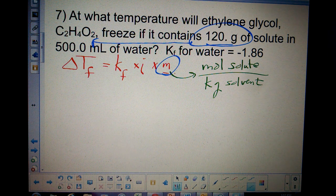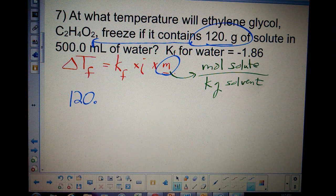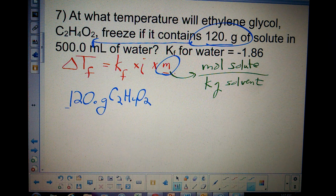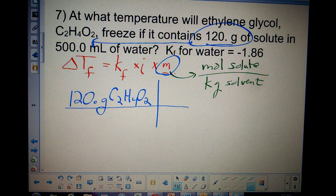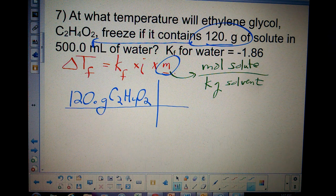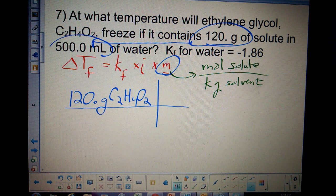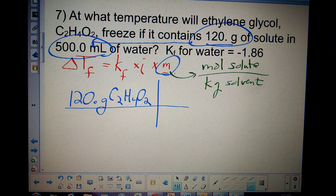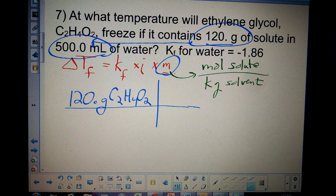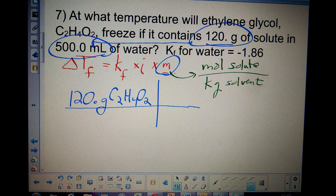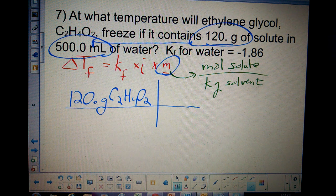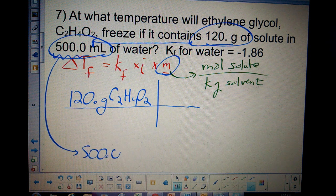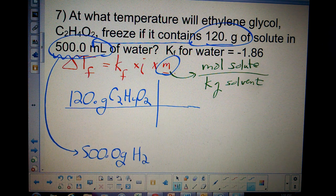Let's solve for molality. We're going to do a conversion. Let's do 120 grams of C2H4O2. Usually I put that over 1, but I'm going to put it over the kilograms of water, because then I can divide by the kilograms of water to get the molality. 500 milliliters of water is actually equal to 500.0 grams of water.